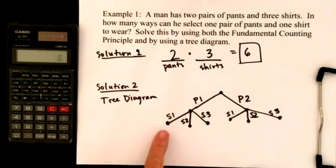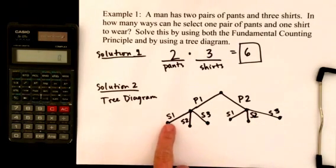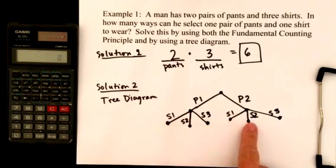And if I count these branches at the bottom, I have one, two, three, four, five, six. There were six ways he could have made his selections.